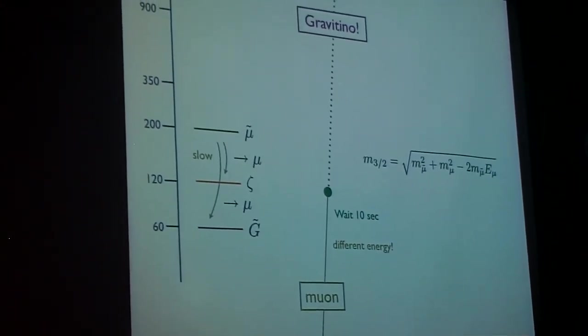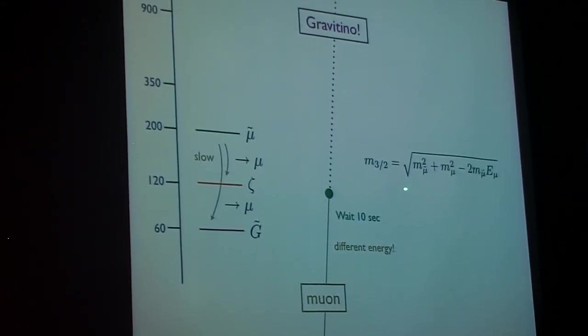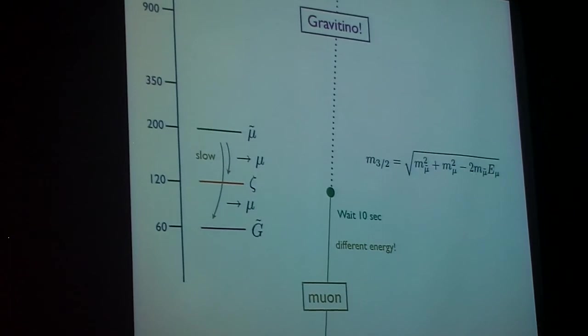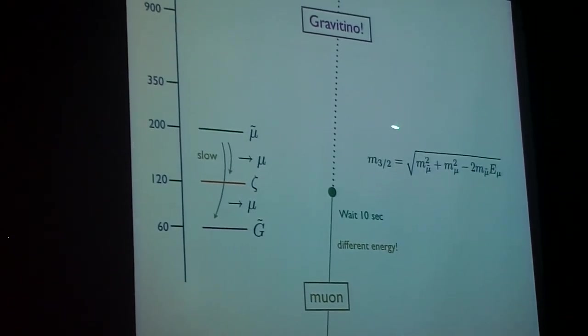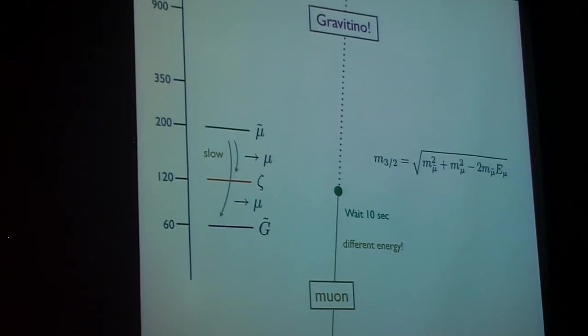This muon screaming out with a different energy would be coming from the decay of the smuon all the way down to the Gravitino. Again, using the mass of the smuon, the mass of the muon, and the energy of the muon, you would infer the mass of this Gravitino. In this example, the inferred mass is 60 GeV.